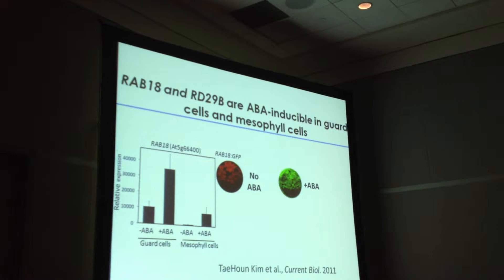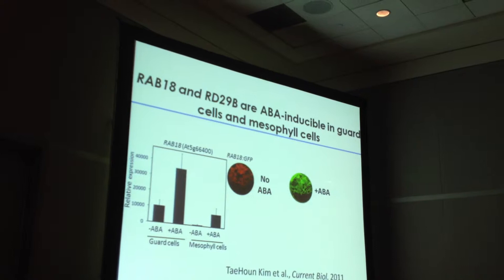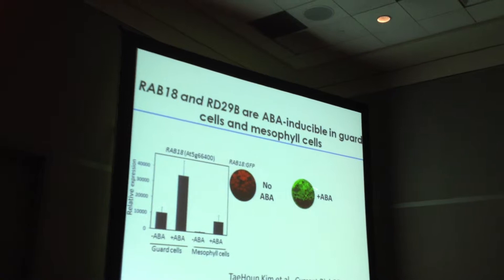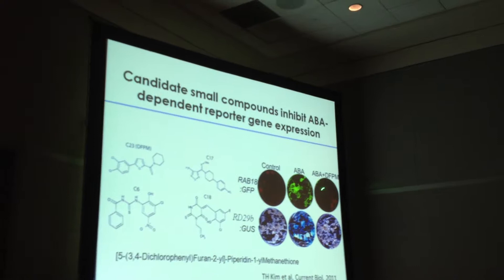First we had to create an ABA reporter line: the RAV18 promoter from our microarrays driving GFP — very strong induction. This shows leaf chlorophyll in red, and after ABA treatment, GFP fluorescence. So we could screen in 96-well plates for chemicals that turn off this ABA-induced fluorescence.